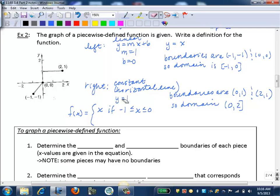And then our right piece, the equation is y equals one. So we'll have here f of x equals one. And that's if, now we look at our boundaries. So we want to go from zero to two, not including zero. So as an inequality, we'll have zero less than x less than or equal to two. So here is the equation of our piecewise defined function.